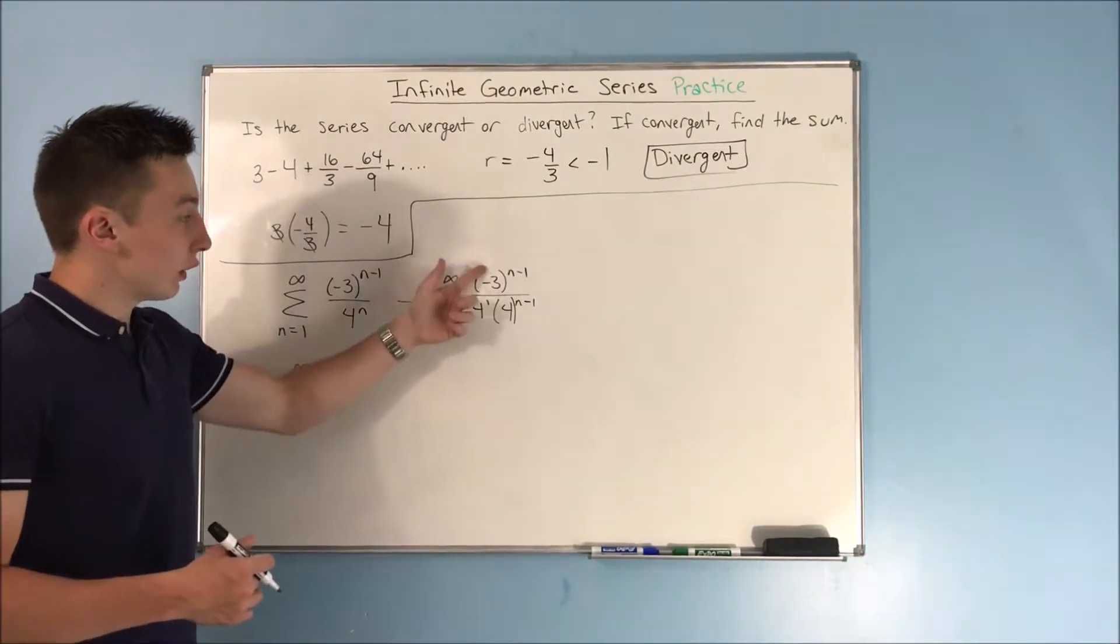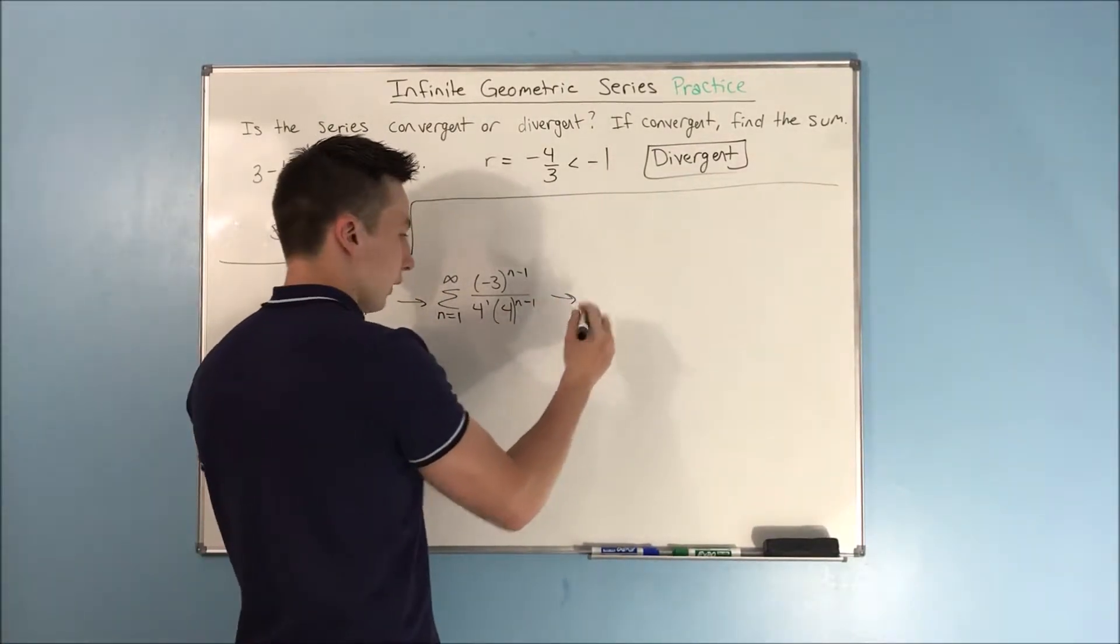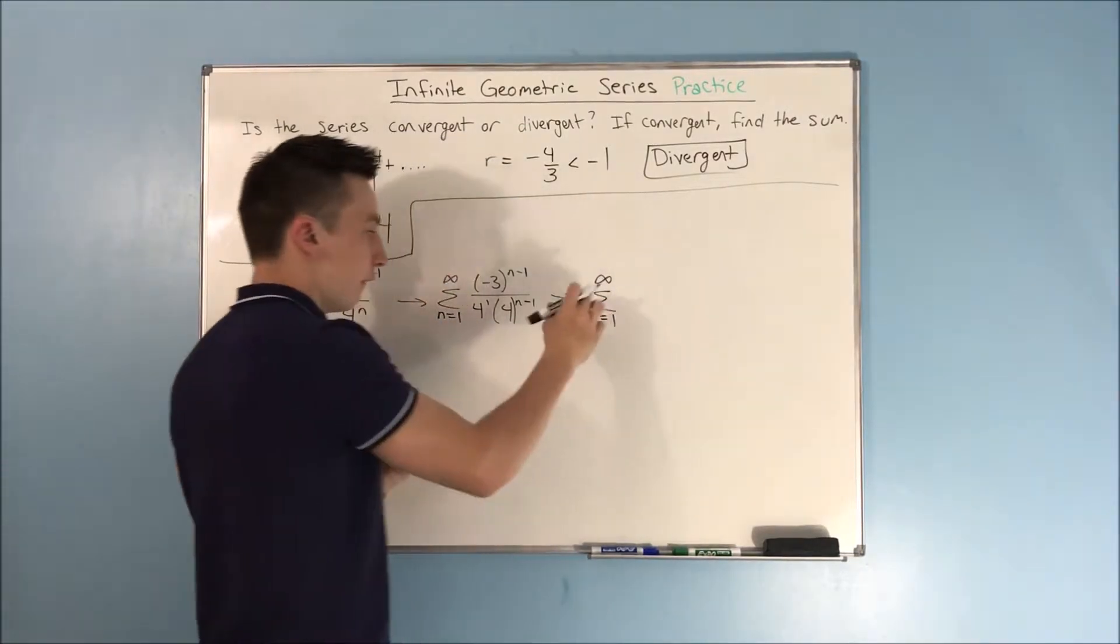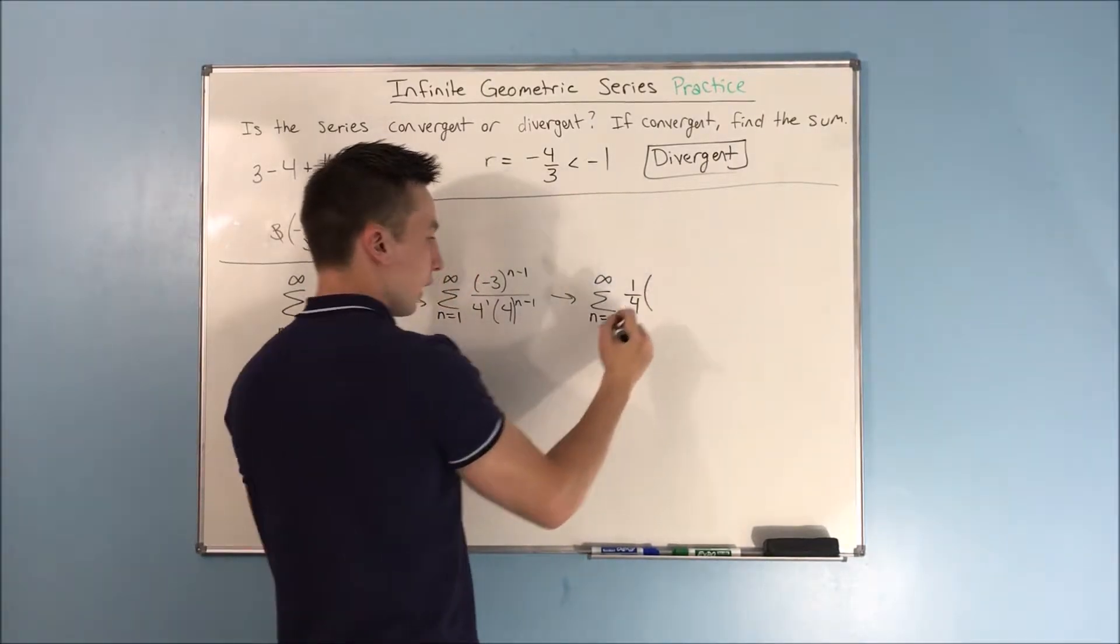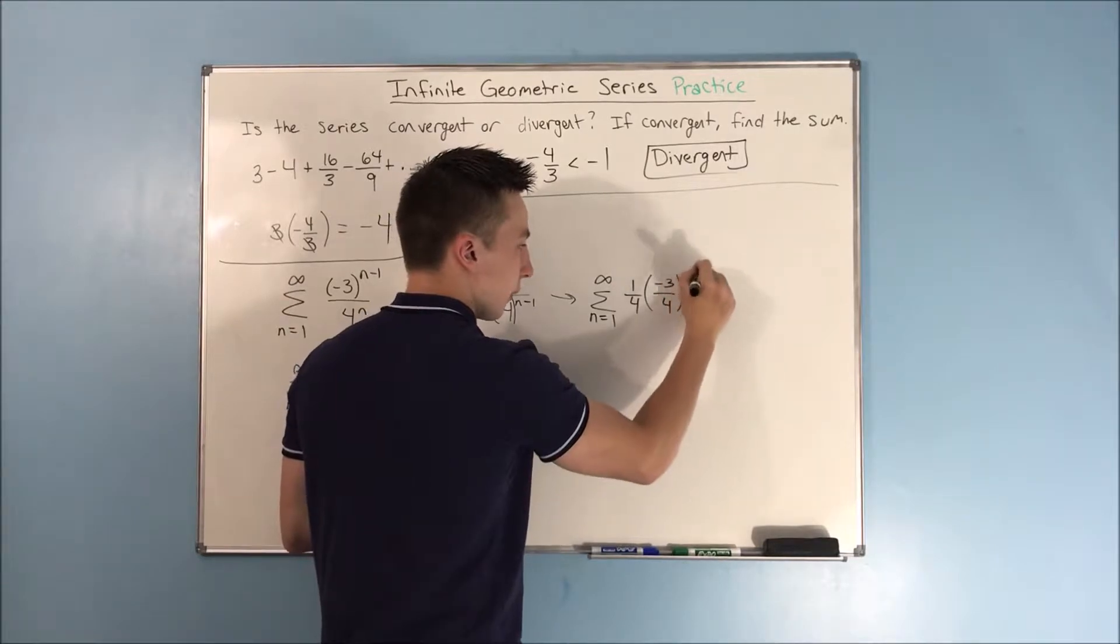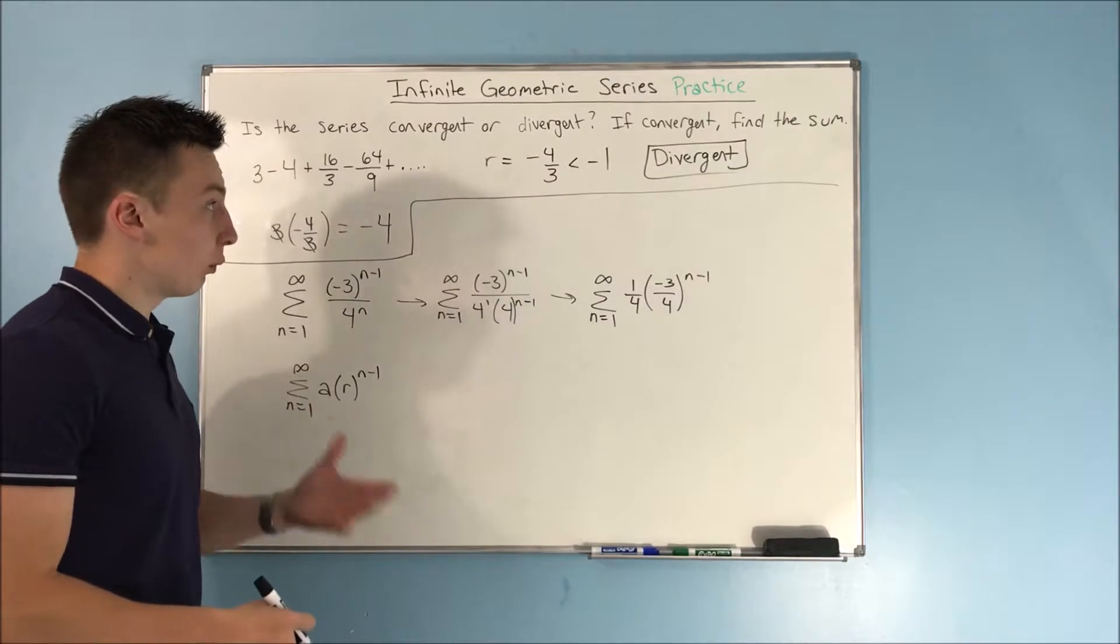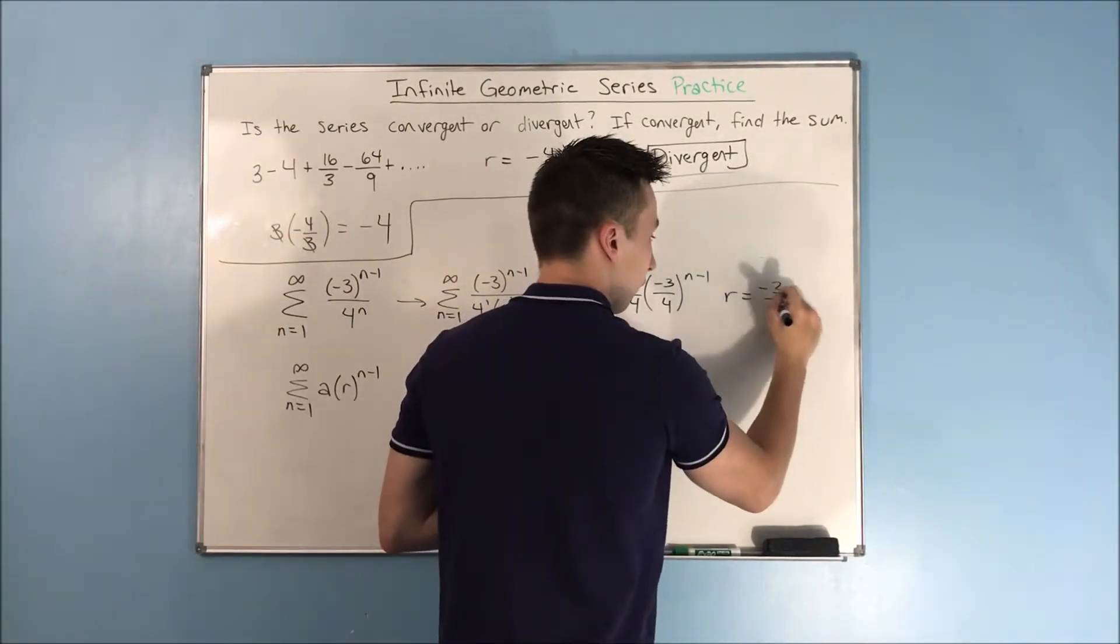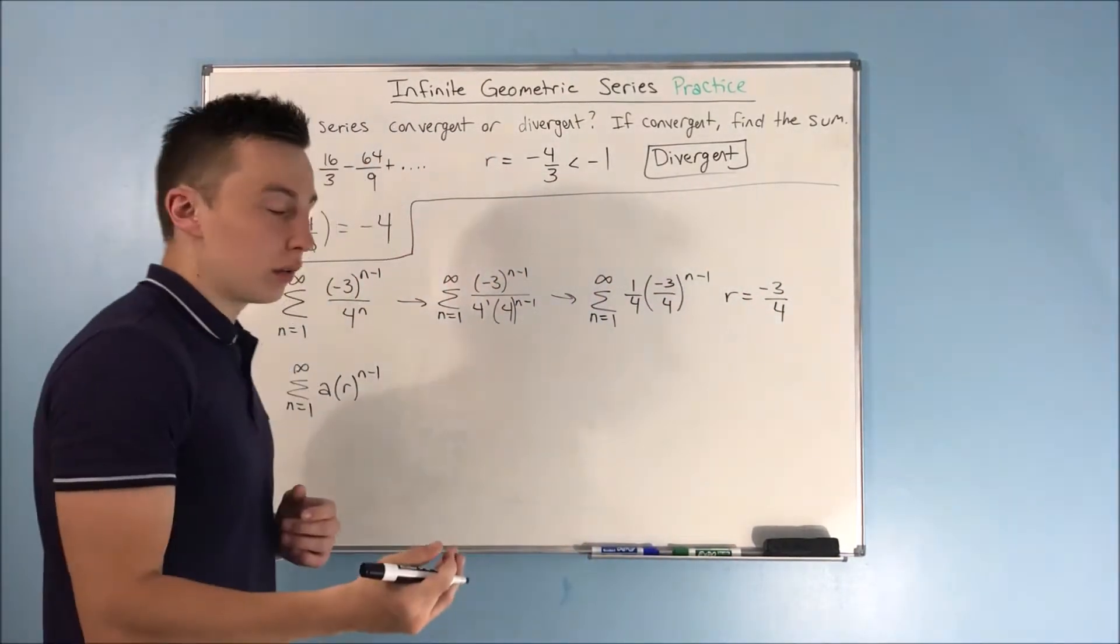Now, we can combine this negative 3 and the 4 into the same exponent, and we get the sum from n equals 1 to infinity of 1 fourth times negative 3 over 4 to the n minus 1 power. Now, what's our common ratio? Well, in this case, it's negative 3 over 4, and that is in between negative 1 and 1.